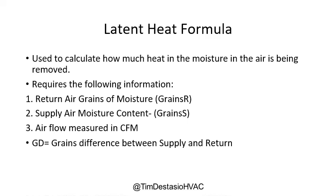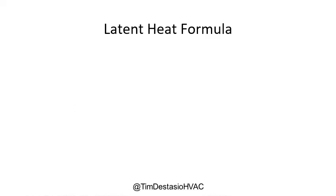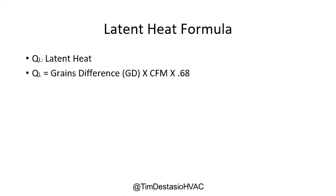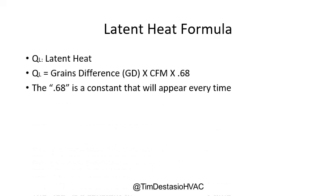It's a similar concept to the sensible heat formula. Instead of dry bulb temperature difference, this time we're looking at grains of moisture difference between supply and return. Here's our formula: Q sub L equals grains difference times CFMs times a constant of 0.68. Just like the sensible heat formula had a constant that appears every time, so does the latent heat formula — only this time it's 0.68.